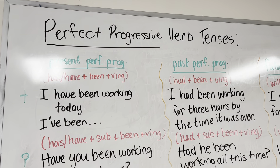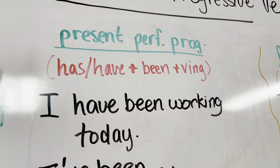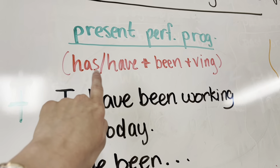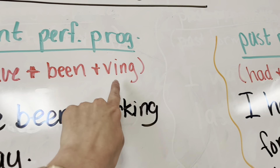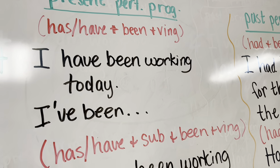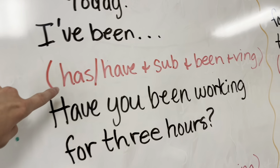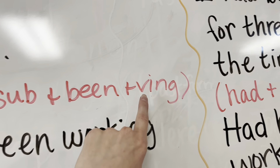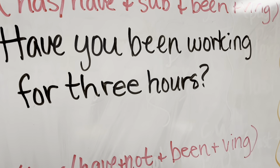We've talked about progressive verb tenses. Now let's talk perfect progressive verb tenses. Present perfect progressive uses has or have, along with the word been — our form of be — plus our ING verb form. I have been working today, or I've been working today. In the form of a question: has or have, then your subject, then been, and your verb form — have you been working for three hours?